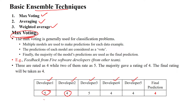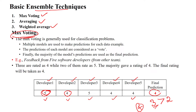Five occurred two times, and four occurred three times — four was given as output by three models, while five was given by only two models. Since three models is greater than two, the output four is selected as the final output. This is maximum voting.